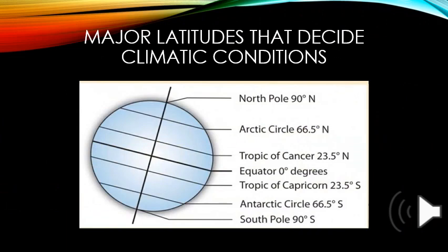Besides the equator, there are four more important latitudes which play an important role in deciding the relationship between the earth and the sun. You can see that in the picture. Those are as follows: Tropic of Cancer at 23.5 degrees north, Tropic of Capricorn at 23.5 degrees south, Arctic Circle at 66.5 degrees north, and Antarctic Circle at 66.5 degrees south.